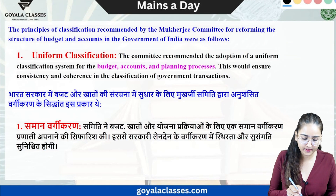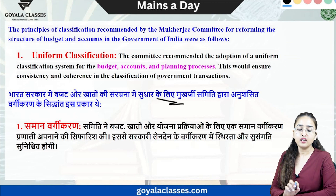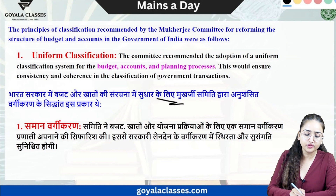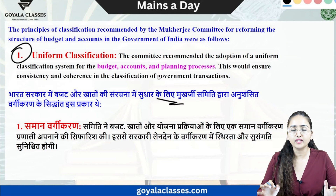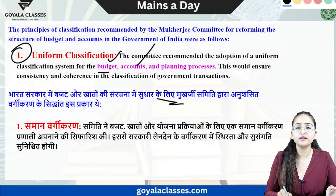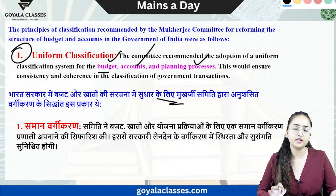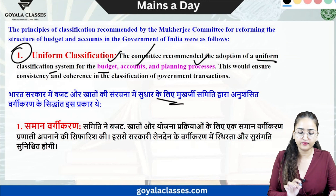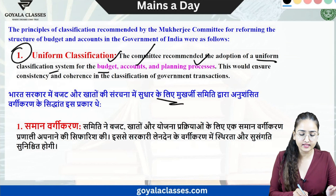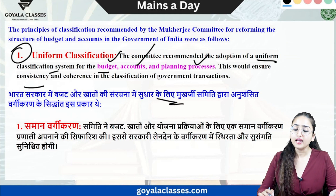The first principle was uniform classification. The recommendation was that uniform classification should apply to all departments — whatever expenditure occurs, the budget, accounts, and planning process should be made uniformly across all departments. It should not be that one department follows a different system. Uniform basis classification of budget, accounts, and planning will bring consistency and stability, and all departments will follow the same uniform structure.